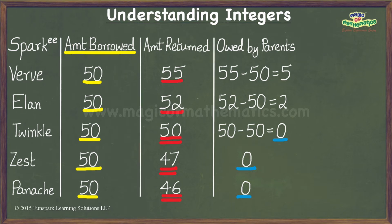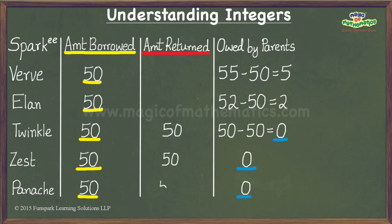We also observe that if we erase the entries under the column labeled Amount Returned and try to calculate these entries again from the available information, we will end up calculating the amount returned as 50 sparks each in the case of Twinkle, Zest, and Panache. But as we know, Zest and Panache returned 47 and 46 sparks respectively to their parents, and hence what we calculated in the case of Zest and Panache is wrong.